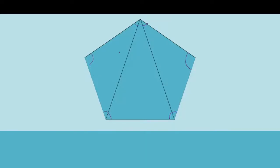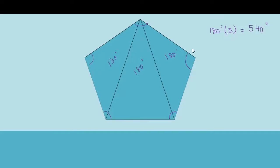I know that the interior angles of each triangle is 180 degrees. Since I'm trying to find the sum of the interior angles of the pentagon, all I need to do is add up all of these 180 degrees, or take 180 degrees and multiply it by three. So the sum of the interior angles of a pentagon is 540 degrees. Notice that three is two less than the number of sides of this polygon — since it's a pentagon, it's five, and two less than five is three.